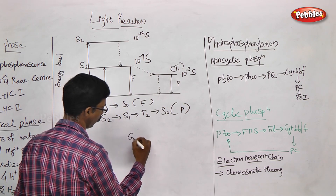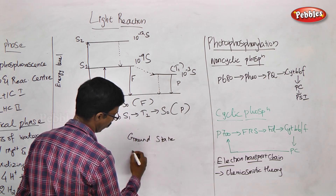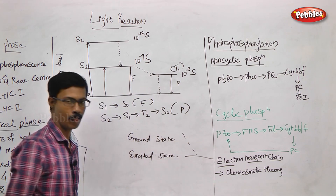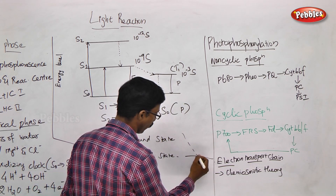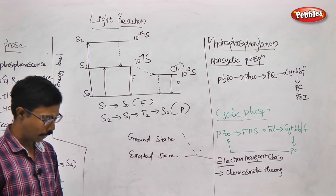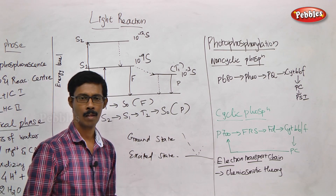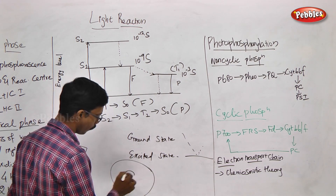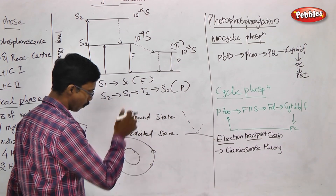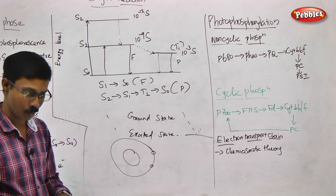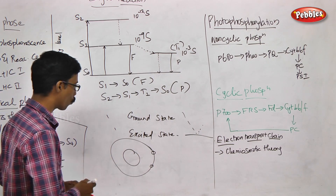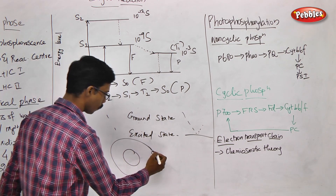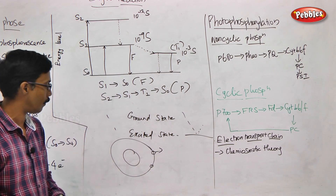We see two states: one is the ground state of the molecule and the excited state of the molecule. If we hit an object, normally the ground state electrons will excite — that is what is called the excited state. In the excited state, electrons are released to the outermost orbital. When sunlight hits an object, the electrons will excite.